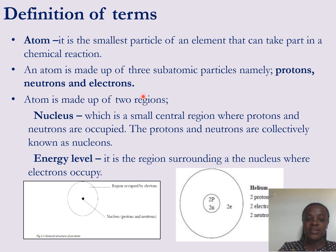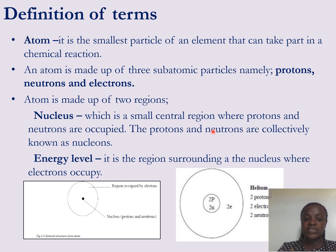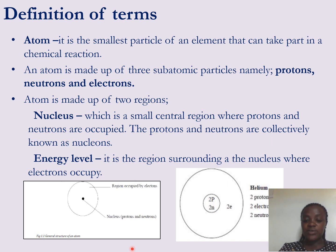There are three subatomic particles of an atom: protons, neutrons, and electrons. The structure of an atom contains two regions. The first is the nucleus — a small central region where protons and neutrons are found. Protons and neutrons together are collectively known as the nucleus.